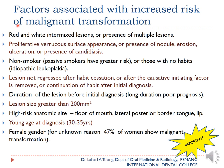First, a red and white intermixed lesion or presence of multiple lesions — a person with one area of red-and-white mixed lesion is less likely to transform to malignancy than someone with two or more areas. Additionally, a proliferative varicose surface appearance, presence of a nodule, erosion, ulceration, or presence of candidiasis — any of these features increase the risk of malignant transformation.